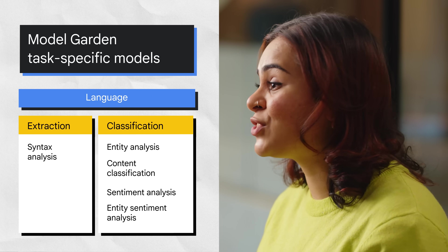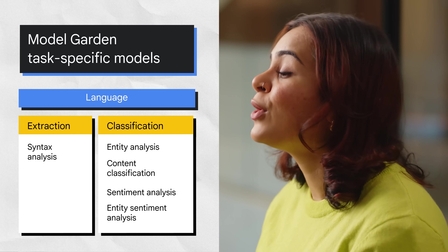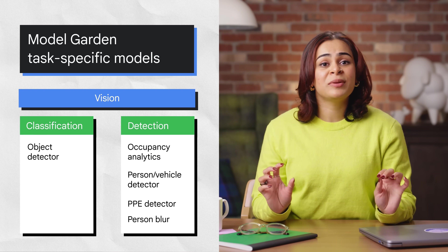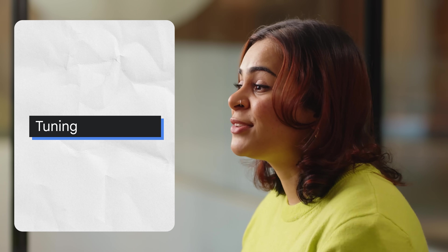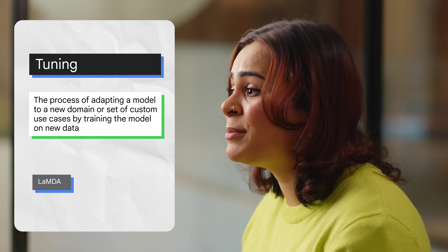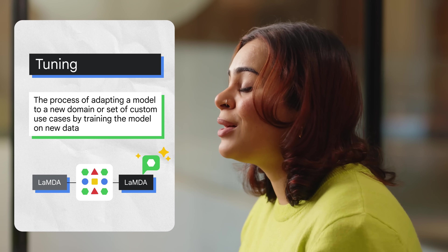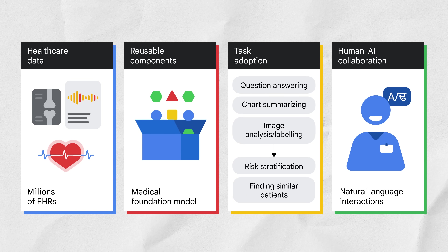Task-specific tuning can make LLMs more reliable. Vertex AI provides task-specific foundation models. For example, if you need to gather how your customers are feeling about your product or service, you can use a sentiment analysis task model. For vision tasks, if you need to perform occupancy analytics, there is a task-specific model for your use case. Tuning a model enables you to customize model responses based on examples of the tasks you want the model to perform — adapting a model to a new domain or custom use cases by training it on new data. You can also fine-tune the model by bringing your own dataset and retraining by tuning every weight in the LLM, though this requires a big training job and hosting your own fine-tuned model.